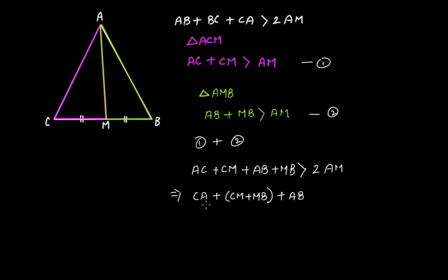So the point is that we just want to bring this left-hand side exactly as this is, because we have the right-hand side as 2AM, we've already got that. But we have to bring the LHS exactly similar to this one. So this will be AB plus BC plus CA. I'm just rearranging it so that it looks exactly similar to this one. It's greater than 2AM.